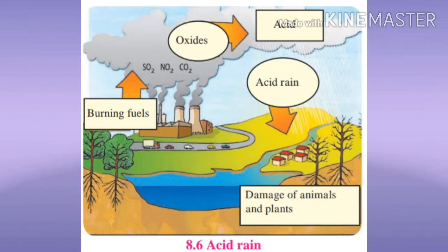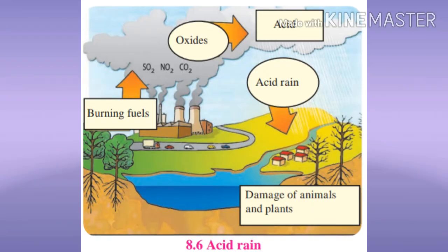Acid rain. Oxides of sulfur and nitrogen are released into the atmosphere through burning of coal, timber and fuel oils. Those oxides mix with rain water and form acids like sulfuric acid, nitric acid, and nitrous acid. These acids mix with raindrops and snowflakes and come down as rain, called acid rain.